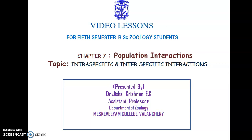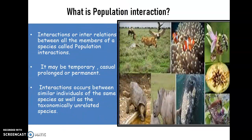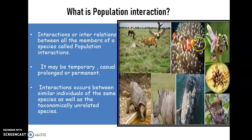Welcome back to class. Today we are starting with the seventh chapter, that is population interaction. We will begin with the topic of intra-specific and inter-specific interactions. Before we move to the topic, we should know what is meant by a population interaction. In this picture, there are a lot of interactions generally taking place between different organisms. The best example is the interaction between a bee and a flower, where two different species are involved — one plant and one animal.